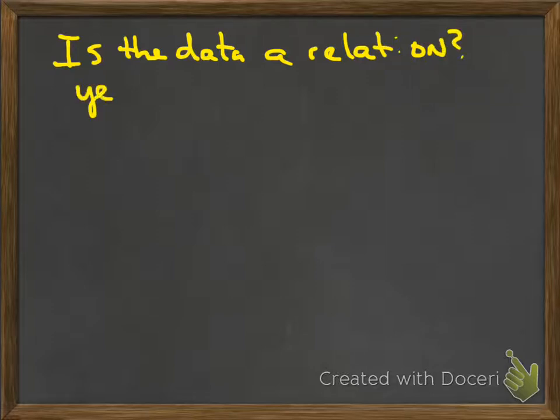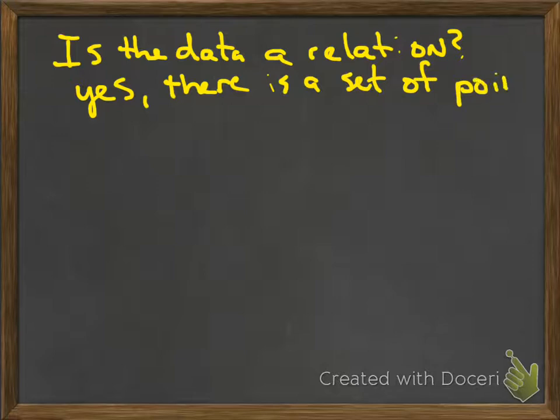Then the question becomes, is this a relation? Is the data set a relation? Well, you've got some points, you're able to represent it in a graph and all that, so yes, it is a relation. As long as you can represent some points and find some points, it's a relation. So like I said, almost everything's a relation, or everything should be a relation. So then the next question is, is it a function? Is the data set a function?